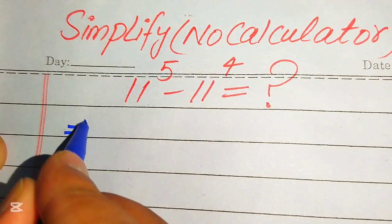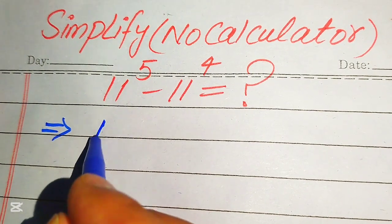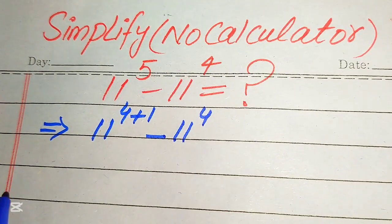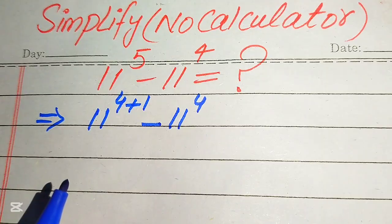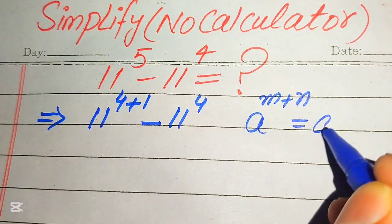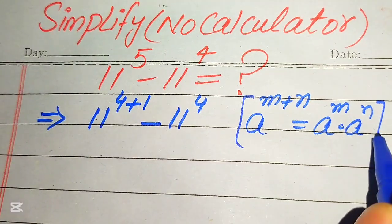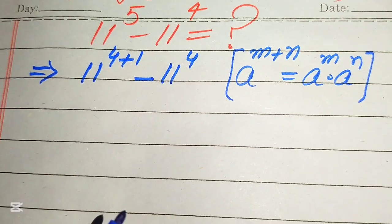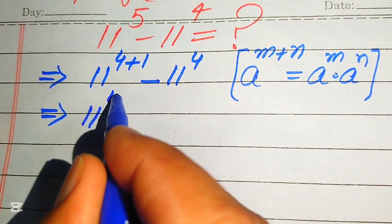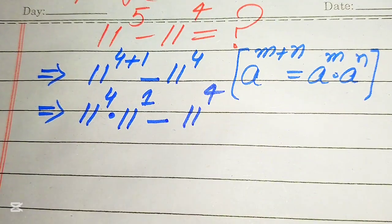First we need to focus on the exponent of this term. The exponent of 11 is 5, and we break this 5 as 4 plus 1, giving us 11 to the power of 4 plus 1, minus 11 to the power of 4. Then we apply the exponent law: a to the power of m plus n equals a to the power of m multiplied by a to the power of n. So this becomes 11 to the power of 4 multiplied by 11 to the power of 1, minus 11 to the power of 4.